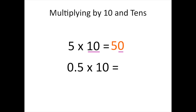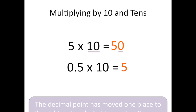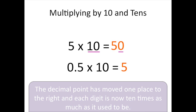5 tenths times 10 equals 5. When a decimal is multiplied by 10, the digits are also moved to the next higher place value. As a result, the decimal point has moved one place to the right and each digit is now 10 times as much as it used to be. So the decimal point moves one place to the right because we are multiplying by 10 and we need that number to be 10 times what it used to be.